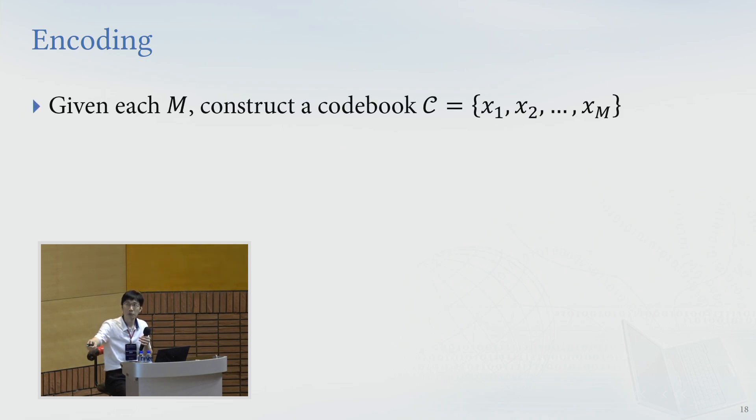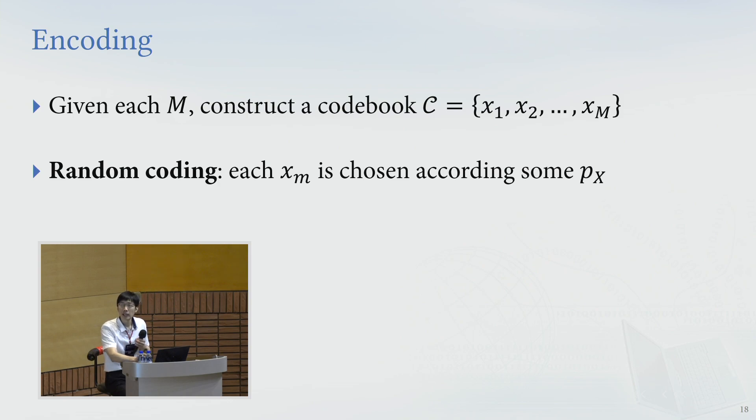So given each capital M, the number of messages you want to send, then we'll construct a code book by the classical encoder, which contains symbols, code words, which is x1, x2 to x capital M. And for each xm, for each code word, we will choose according to some probability distribution Px, we call this random coding.